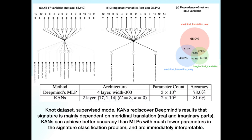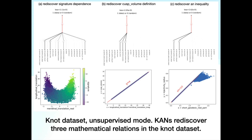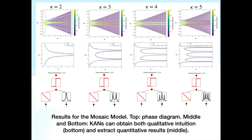On the NOT dataset in supervised mode, KANs can achieve better accuracy than MLPs with much fewer parameters in the knot classification problem, and are immediately interpretable. In unsupervised mode, KANs rediscover three mathematical relations in the NOT dataset. Results for the Mosaic model show that KANs can obtain both qualitative intuition and extract quantitative results.